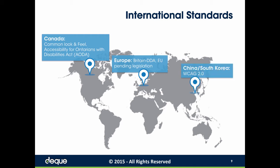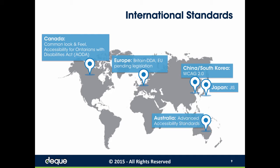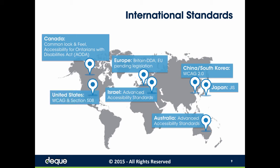In China and South Korea, they're using strict WCAG 2.0 Double-A standards. In Japan, they're utilizing the Japanese Industrial Standard, or JIS, which is also built off of WCAG 2.0 Double-A. In Australia and Israel, they're using the Advanced Accessibility Standard, also built off WCAG 2.0 Double-A standards. And here in the United States, depending on whether you're a government entity or private sector, we're looking at this from a WCAG or Section 508 perspective.